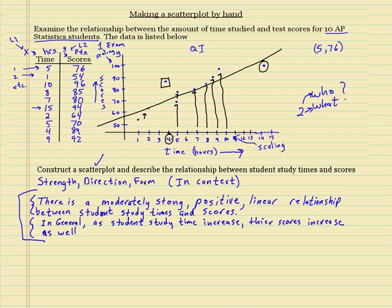So in general, it works. Now for every time you go, for every hour that goes up, if the scores would have went up for every single one, then you don't have to write in general. But if it's not true for every single case, you have to write in general. Or you could also write, as student study times increases, their scores tended to increase as well. So in general is a good word there. Or tended to increase.